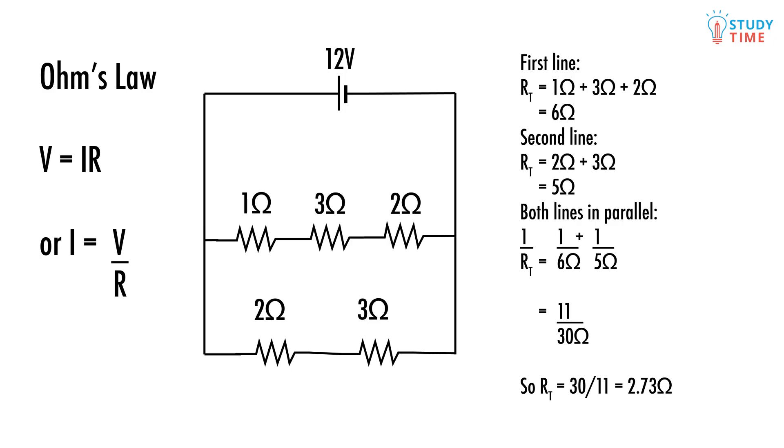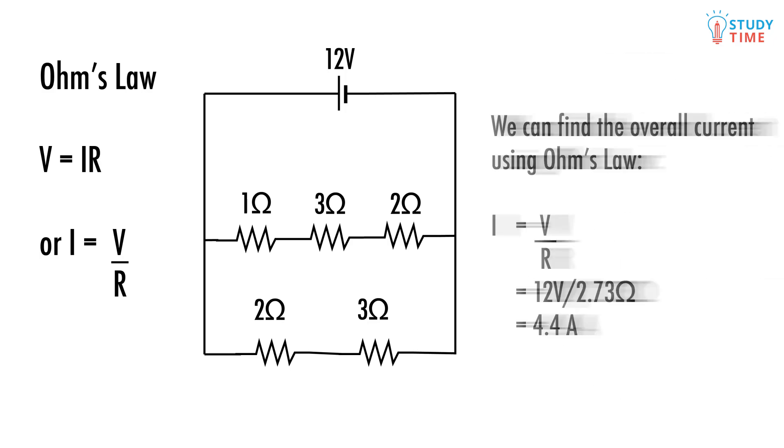The next thing we could do is find the overall current through the circuit. Because it's a parallel circuit the current will be different through each branch. The current through the battery though can simply be found using Ohm's law. Current equals voltage over resistance which is 12 over 2.73 which is 4.4 Amps.